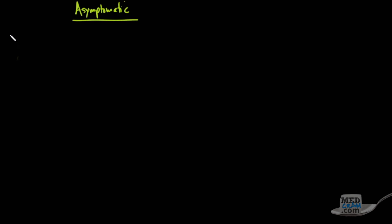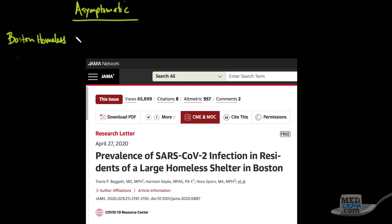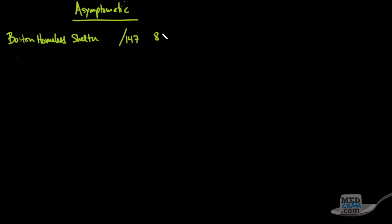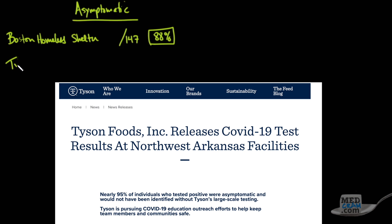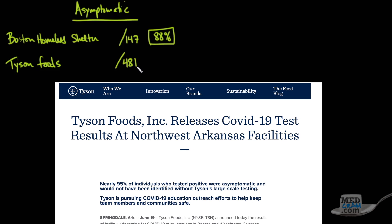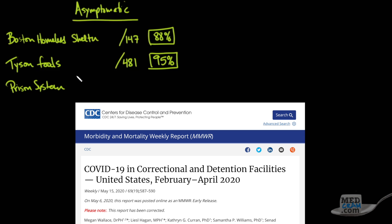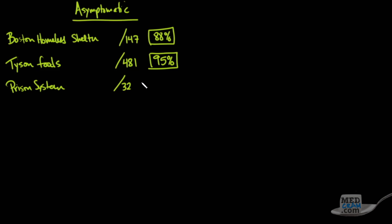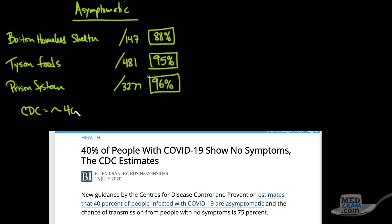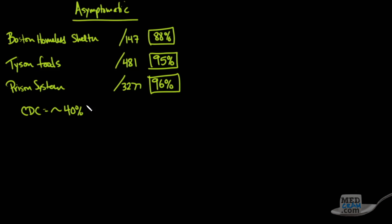If you look at a number of cases, we've got a Boston homeless shelter. Out of 147 people, 88% were asymptomatic. Then there was an outbreak at a Tyson Foods warehouse. Out of 481, 95% were asymptomatic. Then there was a prison system in multiple states that had 3,277, and 96% of these patients were asymptomatic. Currently, the CDC says about 40% of patients who get infected with SARS-CoV-2 have an asymptomatic course. Now remember that 40% number for later.